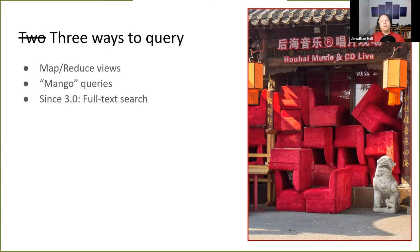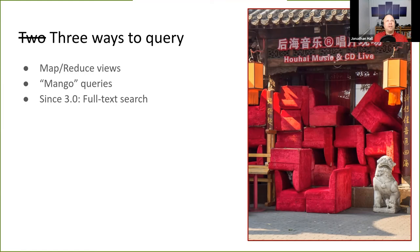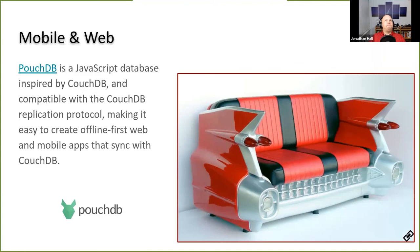There are three ways to query data in CouchDB. The original method is map-reduce views, written in JavaScript, which require preparation by building the view upfront. Since version 2, you can use Mango queries — intentionally spelled like MongoDB and heavily borrowed from the MongoDB query language — which allow arbitrary searches with equals, greater than, regex expressions, etc. New since version 3, you can optionally integrate Lucene for full-text search.